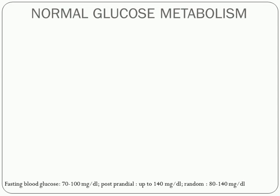Random blood glucose (RBG) is checked regardless of meals and is 80 to 140 mg per deciliter. Now let's understand normal glucose metabolism — how glucose comes back to normal within its limits in a healthy person.